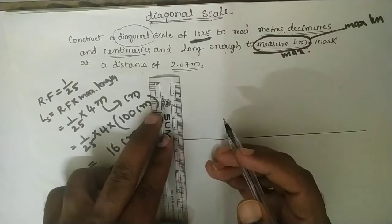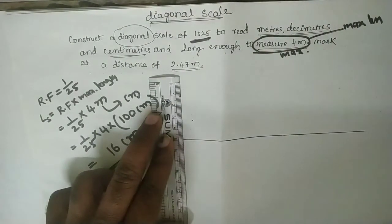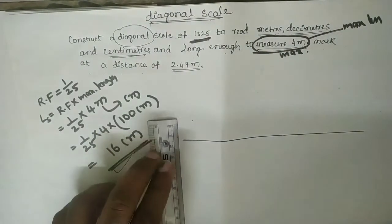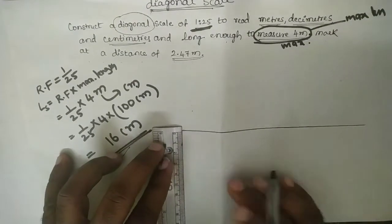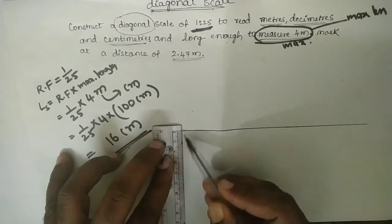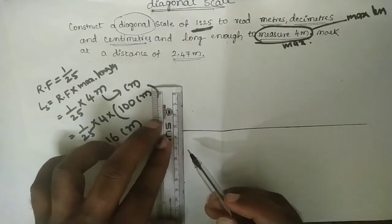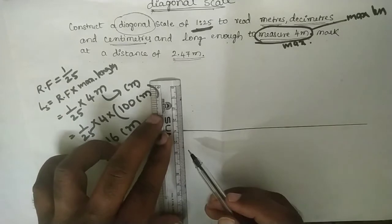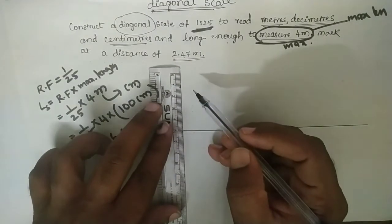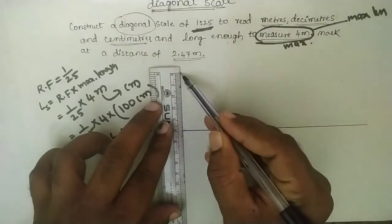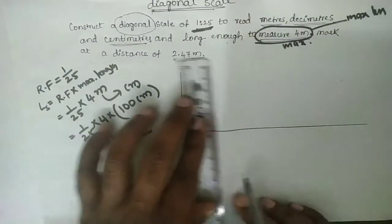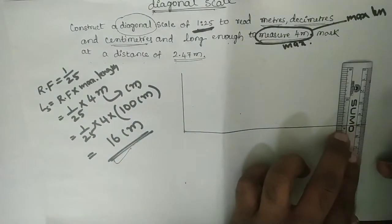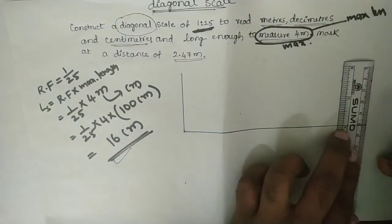Draw one vertical line. The dimension of the vertical line is 50 mm.